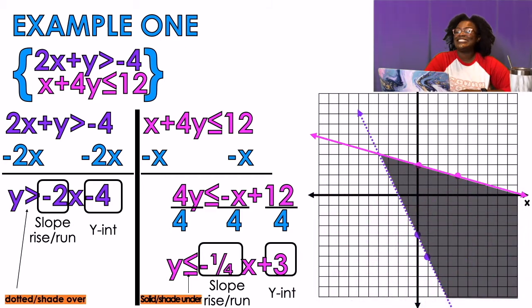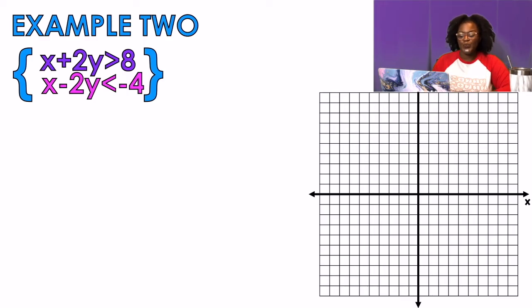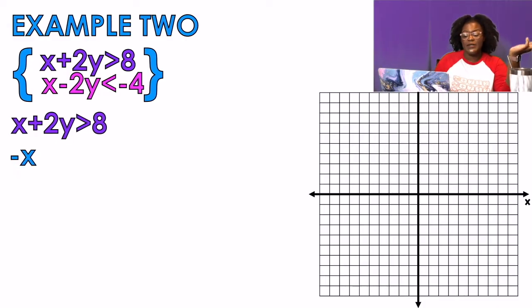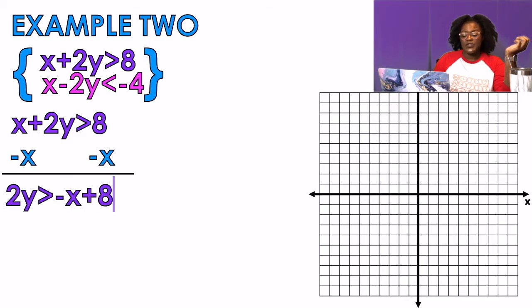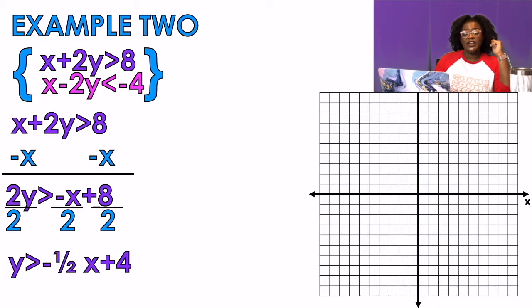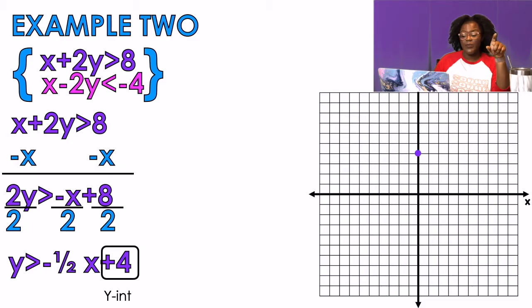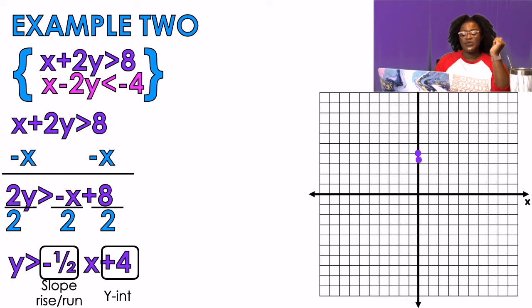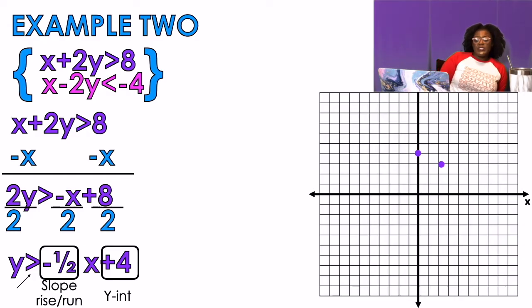Example two. I'll take the purple equation first and isolate y. Subtracting x from both sides gives 2y > -x + 8, then dividing by 2 gives y > -½x + 4. I plot my y-intercept at 4, then apply my slope — rise over run — moving down one space and over two spaces. My symbol is greater than: dotted line, shade over.